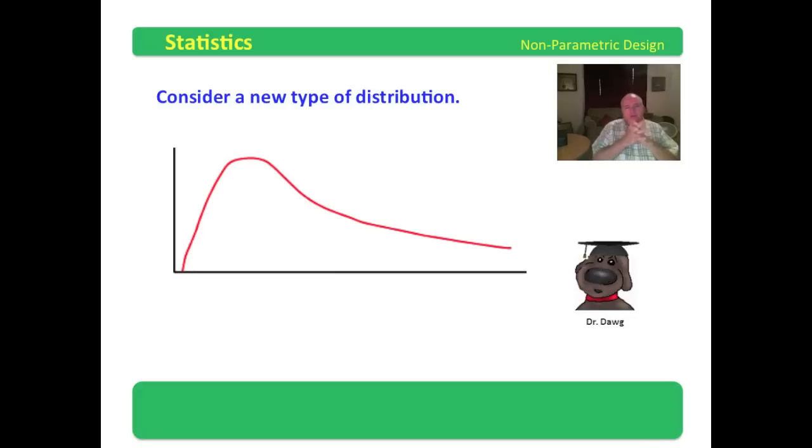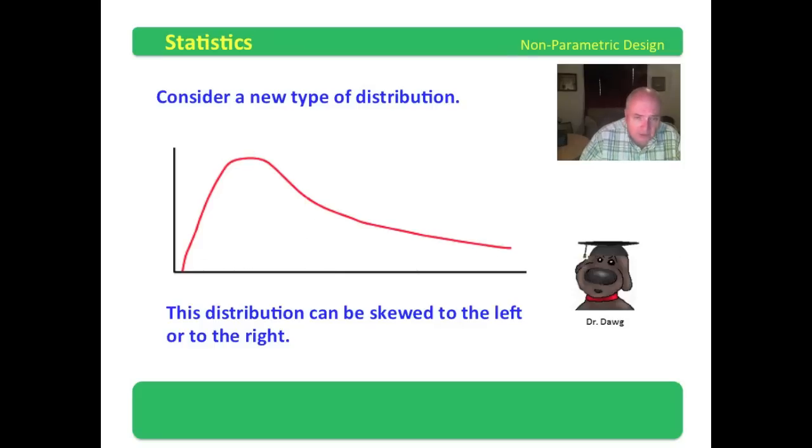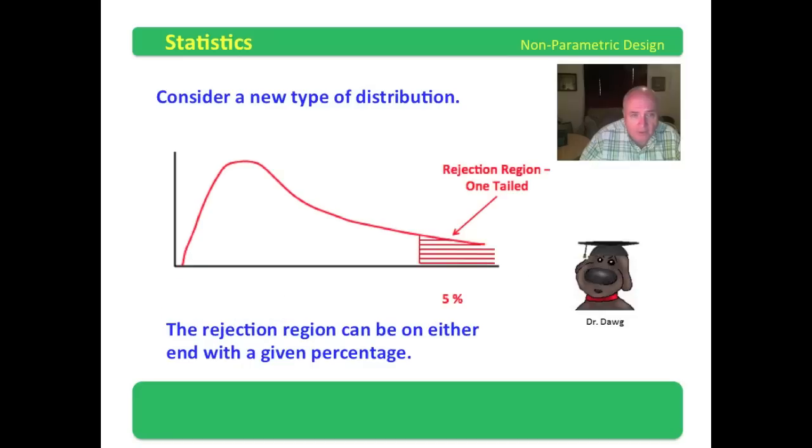Well, I want you to consider a new type of distribution. This is a chi-square distribution. And in this distribution, the bulk of the data may be out on this side trailing off on that side, or the bulk of the data may be out here trailing off on that side. Grades are actually a chi-square distribution. The distribution can be skewed to the left or to the right.